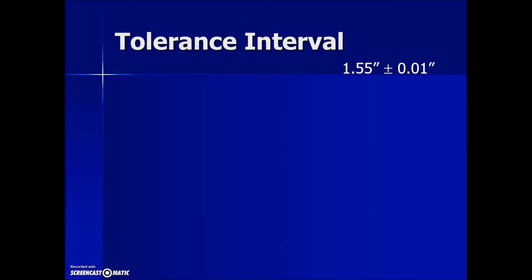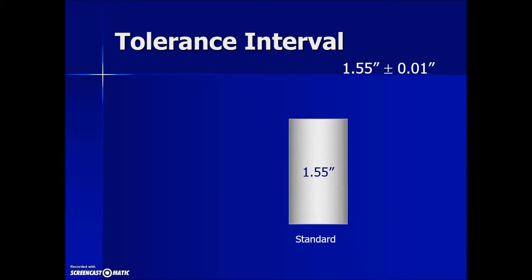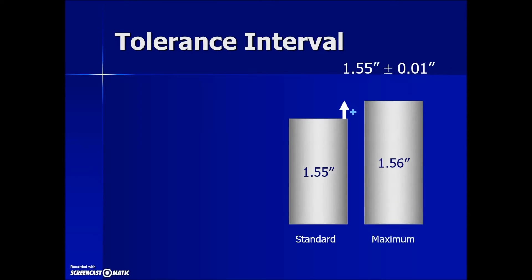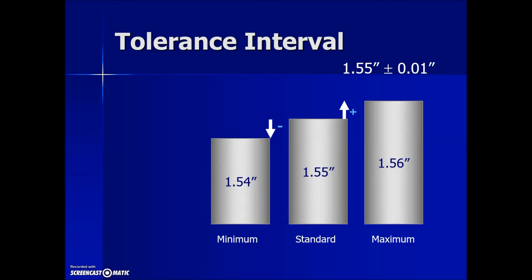To determine a tolerance interval, we need to know the maximum and the minimum. Here we have our tolerance given with the standard measurement plus or minus the variation. If we add 0.01 inches to that, the maximum length would be 1.56 inches. If we subtract the variance, we end up with 1.54 inches for a minimum. The difference between those two gives us our tolerance interval, found by subtracting the lower or minimum limit from the upper limit or maximum.